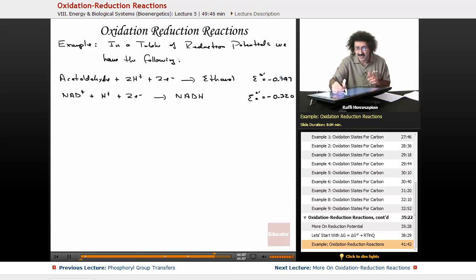This is negative 0.197, and this is negative 0.320. This one is actually more positive than this one, so this will end up staying as written. The acetaldehyde will reduce to ethanol. This one will end up having to reverse. It's going to end up being the NADH that's going to end up turning into NAD plus. Acetaldehyde will reduce. This NADH will end up oxidizing.